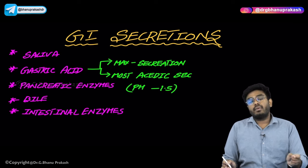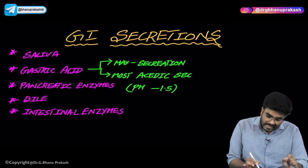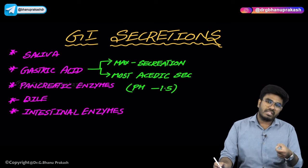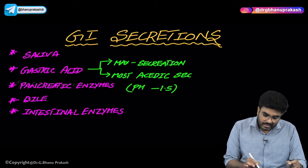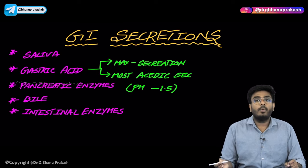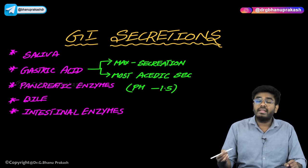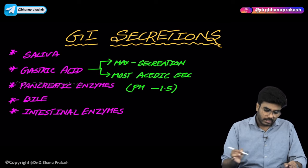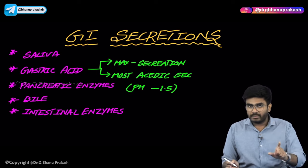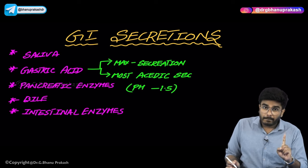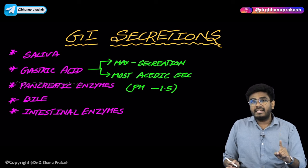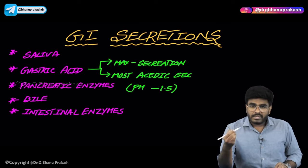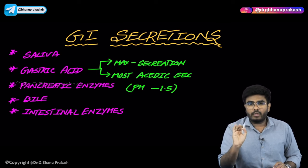That is nothing but the gastric acid. One more important point: this acid has the most acidic pH. The most acidic secretion in your GIT is the acid in the stomach - the pH is around 1.5, which is very, very acidic. Lower the pH, more the acidic nature. So gastric acid is the maximum secretion as well as having the maximum acidic nature.